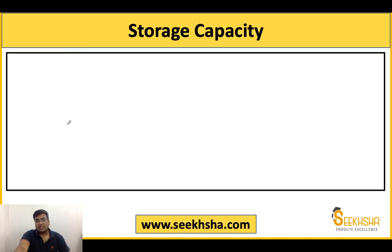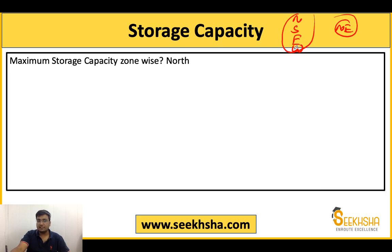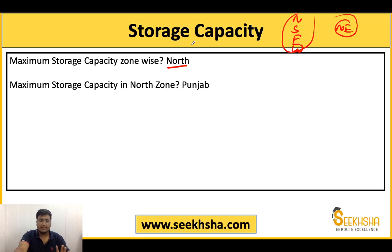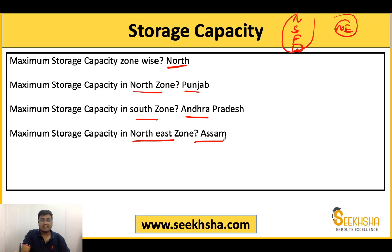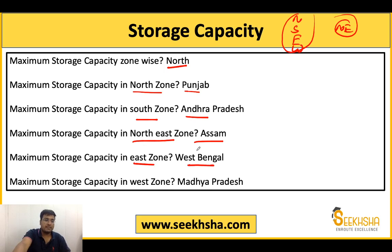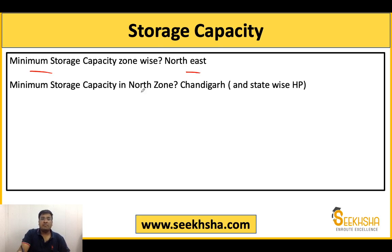Next we discuss storage capacity — basically storehouses for buffer stocking. India is divided into 5 zones: North, South, East, West, and North East. The maximum storage capacity is in the North Zone. The North East Zone has storage in West Bengal, and the West Zone has the minimum storage capacity. So overall: maximum storage is in the North Zone and minimum in the North East Zone.